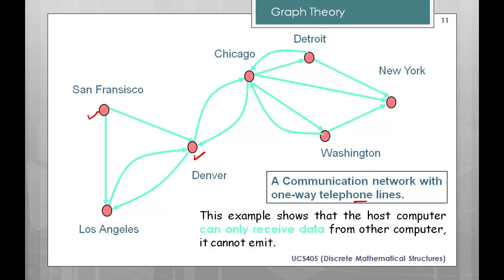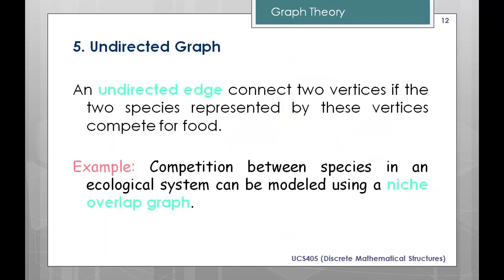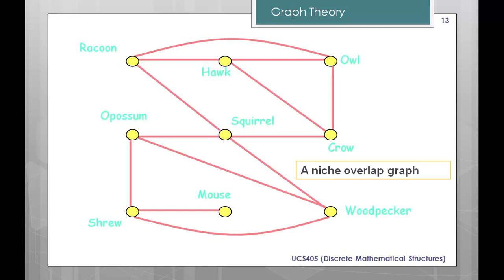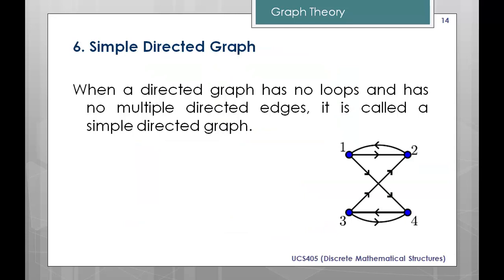An undirected graph means no direction is given. In this case there is no direction between any nodes — the yellow ones are the nodes and the red ones are the edges. No direction is given. Next is the simple directed graph.